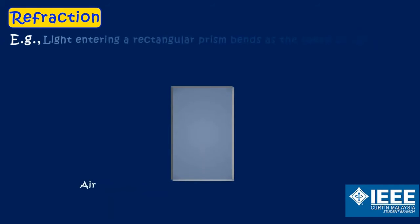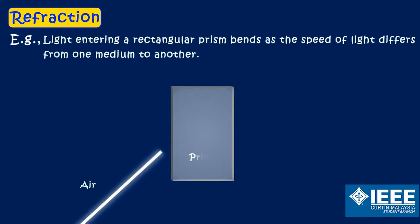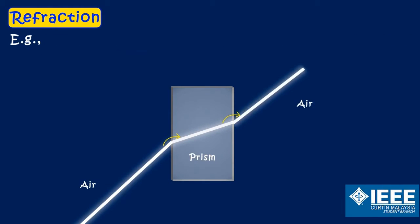Here is an example. When light from air enters a rectangular prism, which is another medium, it bends. Because the speed of light differs in different mediums. And when the light again passes from rectangular prism to the air, it again bends as its speed changes again.